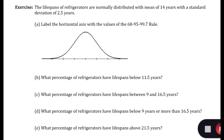Hello, these are exercises for Chapter 3, Section 2. So we had just done some examples of the 68-95-99.7 rule, and these are additional ones.